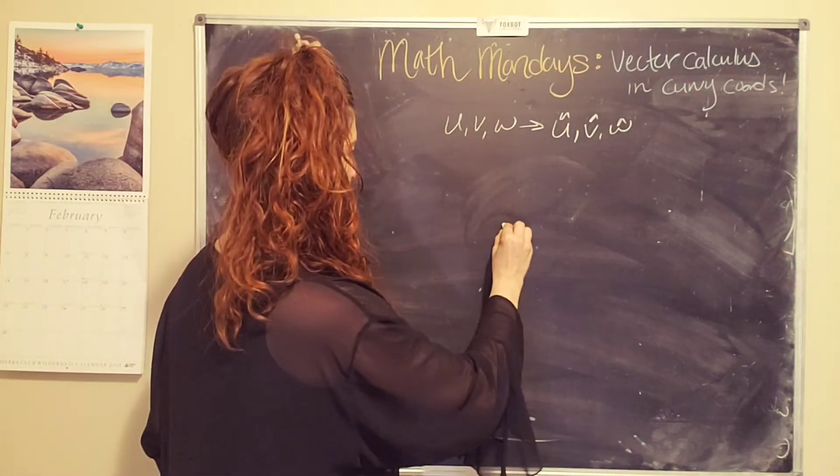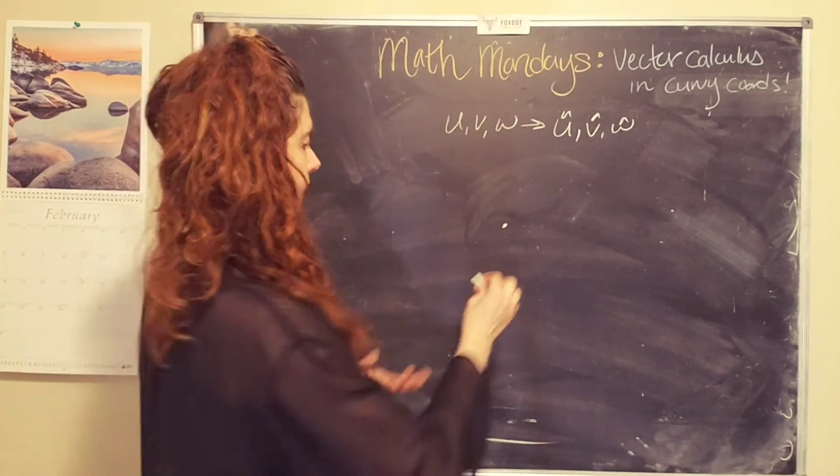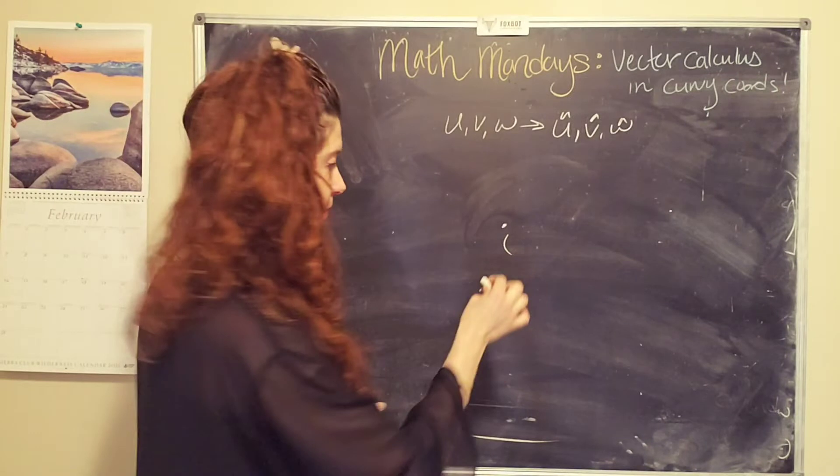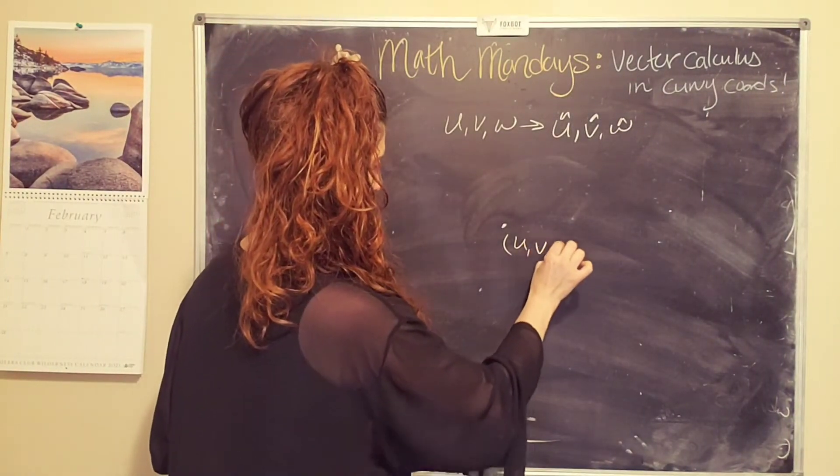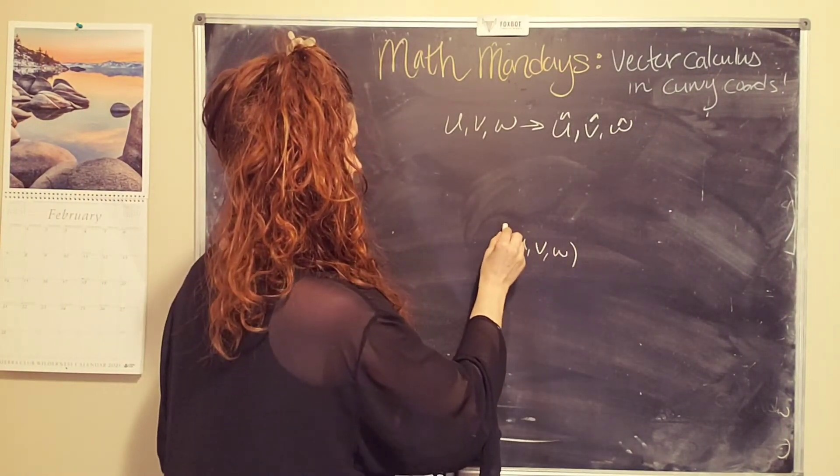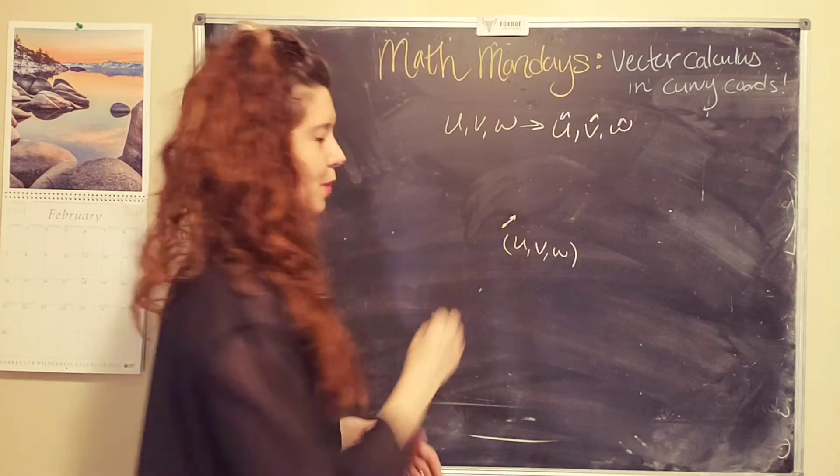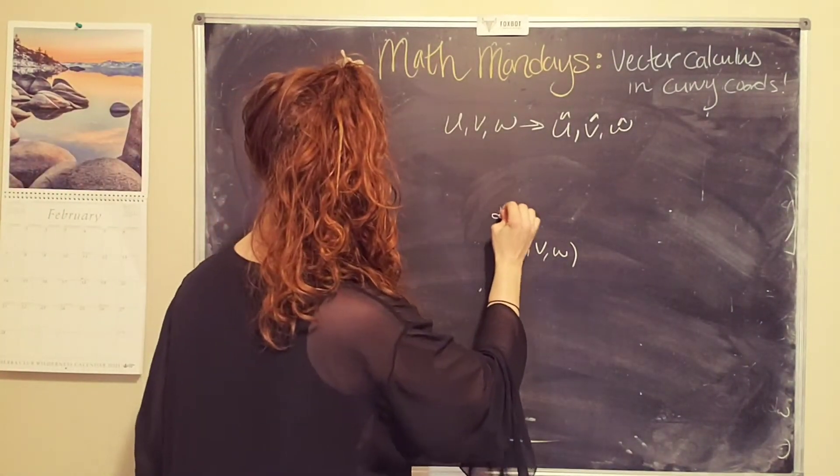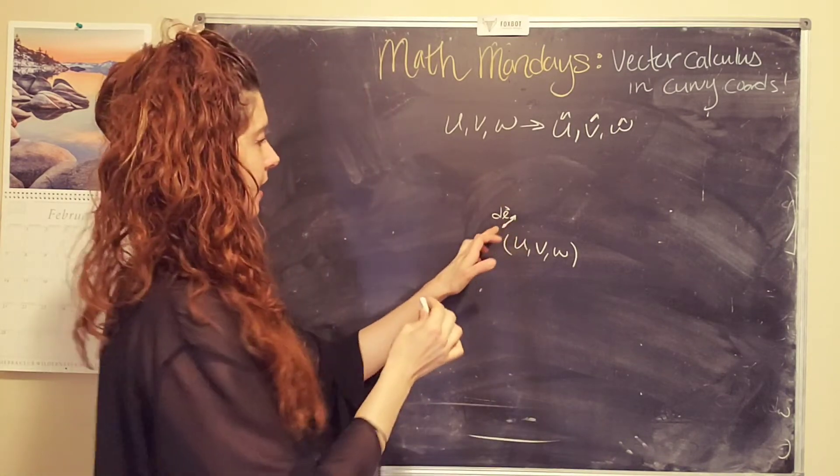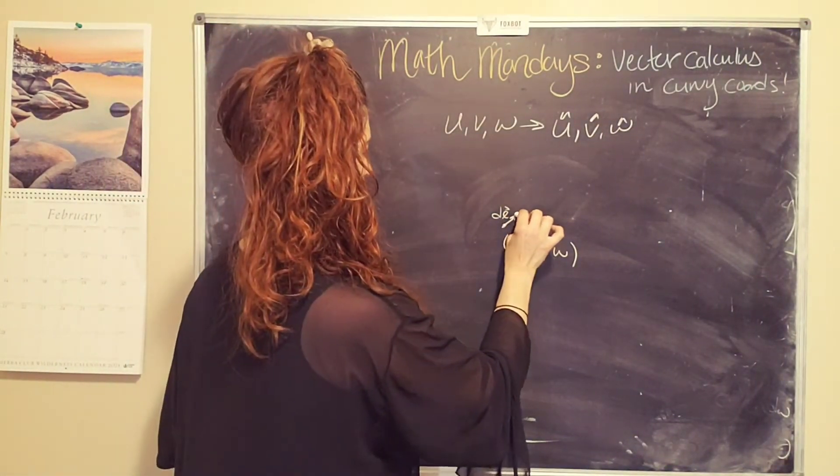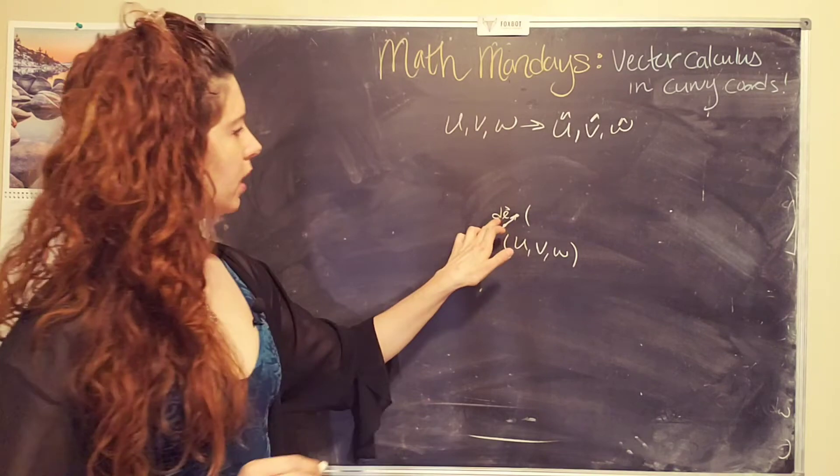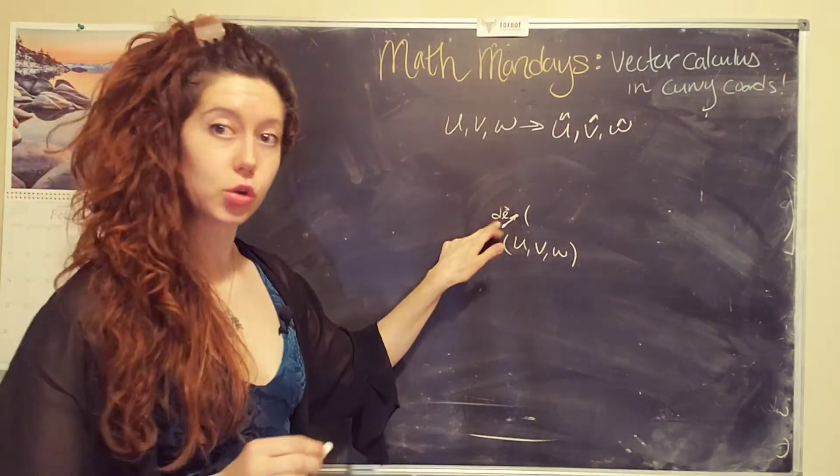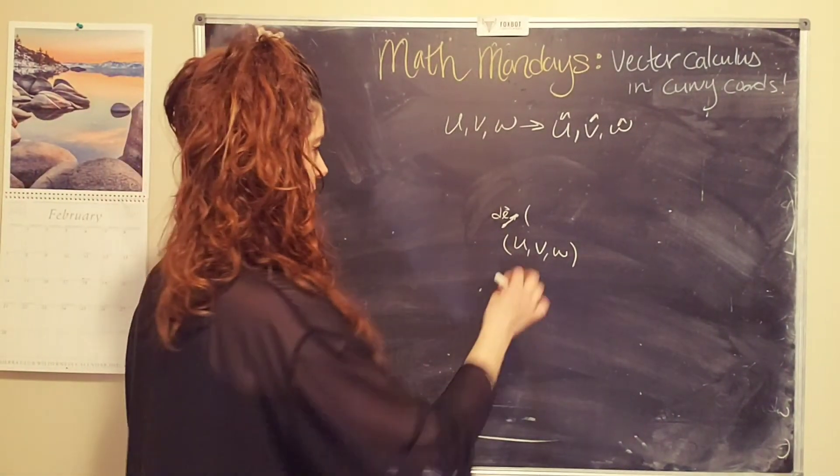So now let's say I have a point in this generic coordinate system, and this point has coordinates u, v, w. And let's say I change this point by a teeny, tiny, infinitesimal amount, called dl. And I want to figure out what this magnitude is, and how I express it in this coordinate system.